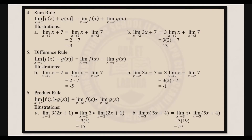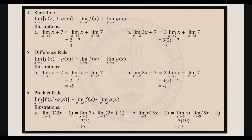Now let's have the sum rule. It states that the limit of f of x plus g of x as x approaches c is equal to the limit of f of x as x approaches c plus the limit of g of x as x approaches c. For example, find the limit of x plus 7 as x approaches 2. That equals the limit of x as x approaches 2 plus the limit of 7 as x approaches 2. Applying the identity rule, the limit of x is 2; applying the constant rule, the limit of 7 is 7. So 2 plus 7 equals 9.